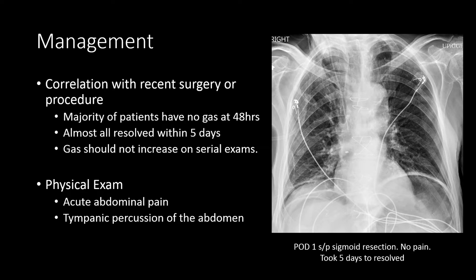Another tip: the gas should not increase on serial exams. If you see increasing free air on upright radiographs of the chest or abdomen, that could be an indication of ongoing bowel perforation. You should also consider doing a physical exam and assessing the patient for acute abdominal pain. If the patient does have acute abdominal pain, even if they've had a recent operation, this could indicate that the free intraperitoneal gas is pathologic.